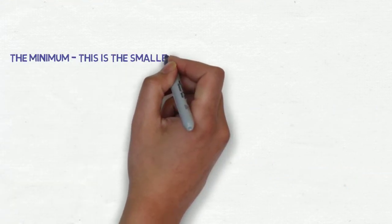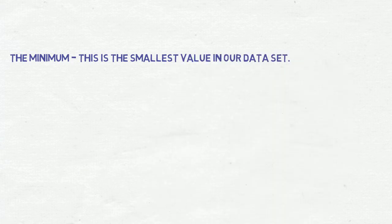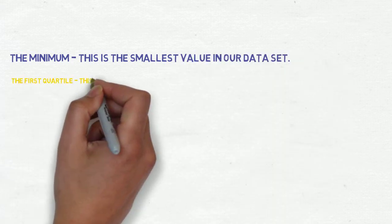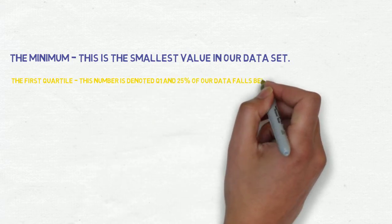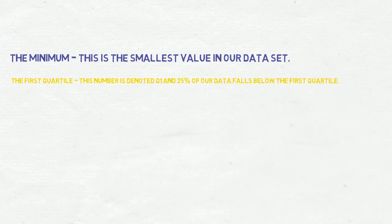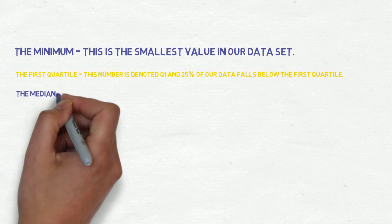1. The minimum - this is the smallest value in our data set. 2. The first quartile - this number is denoted Q1, and 25% of our data falls below the first quartile.